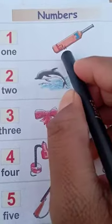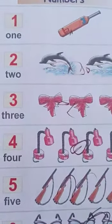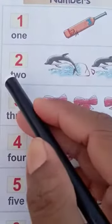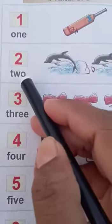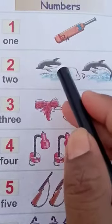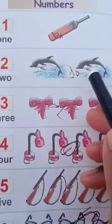Two. T-W-O, two. Here are two fishes, one and two.